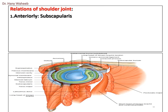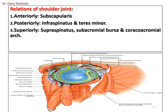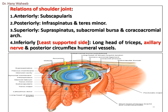Relations of the shoulder joint. Anteriorly: subscapularis. Posteriorly: infraspinatus and teres minor. Superiorly: supraspinatus, subacromial bursa, and the coracoacromial arch. Inferiorly — the least supported side: long head of triceps, axillary nerve, and posterior circumflex humeral vessels.